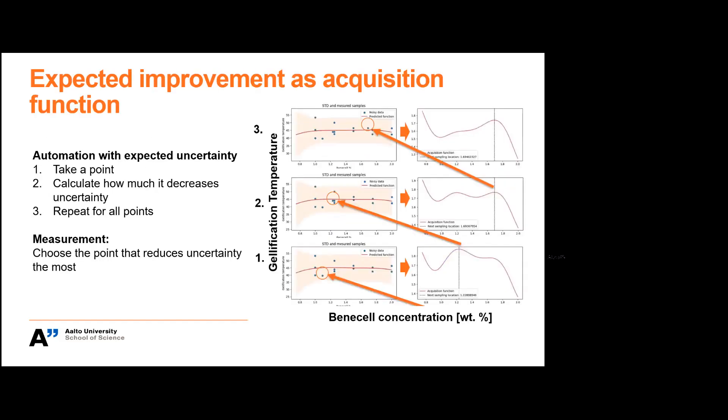Here is in 2D. Basically now we optimize the gelification temperature as a function of benethyl concentration, which is one of our materials that we make the foam out of. So basically what we do is that we first take a point and we calculate how much it decreases the uncertainty of our other measurements. And then we repeat this for all the points in our parameter space. And then we pick one that lowers the uncertainty the most. And in the graphics we start from the low and we add a point, update the acquisition function, add the point, update the acquisition function and so forth. So the computer suggests us a new measurement that makes our life easier.